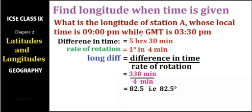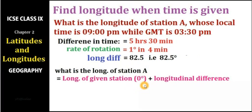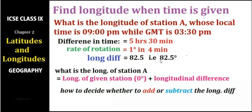So 82.5 degrees is the longitudinal difference between station A and the given station. It is the difference in values of longitude between the two stations — not yet the final longitude. The next step is to add this longitudinal difference to the longitude of the given station in order to find the longitude of our target station, station A.